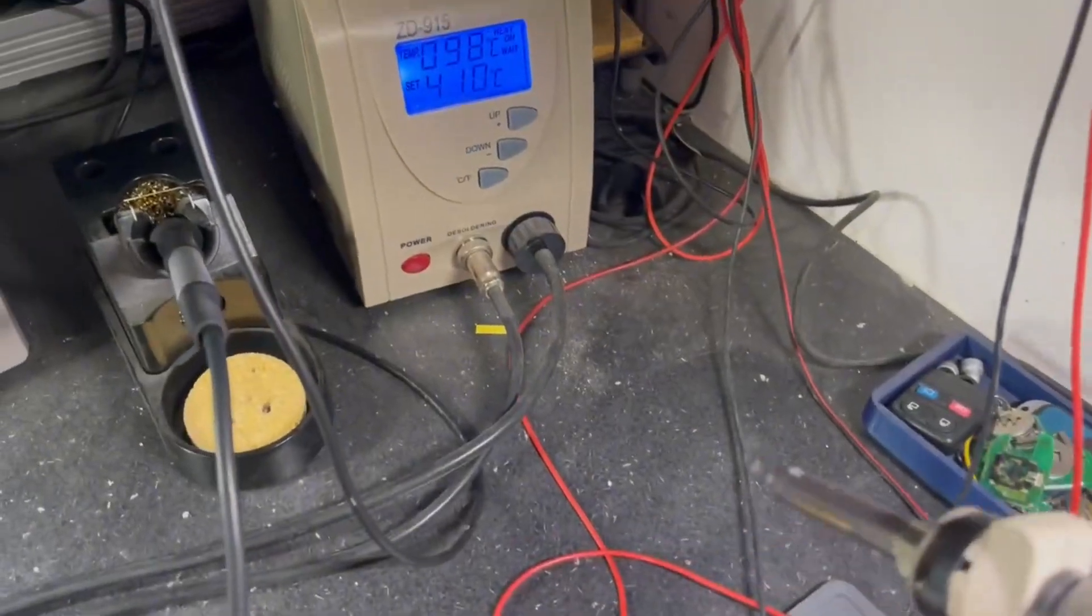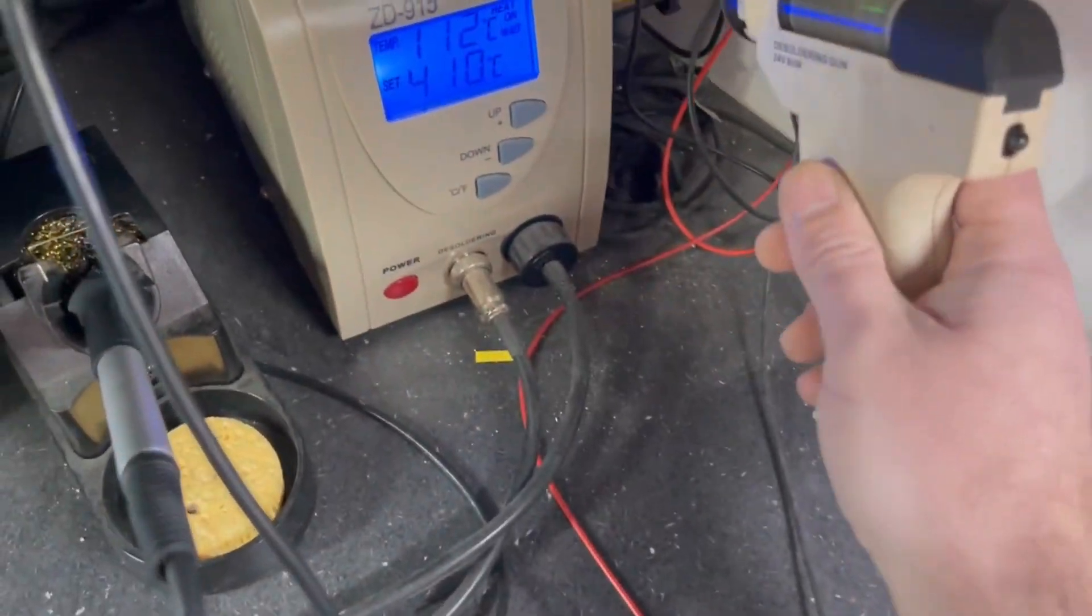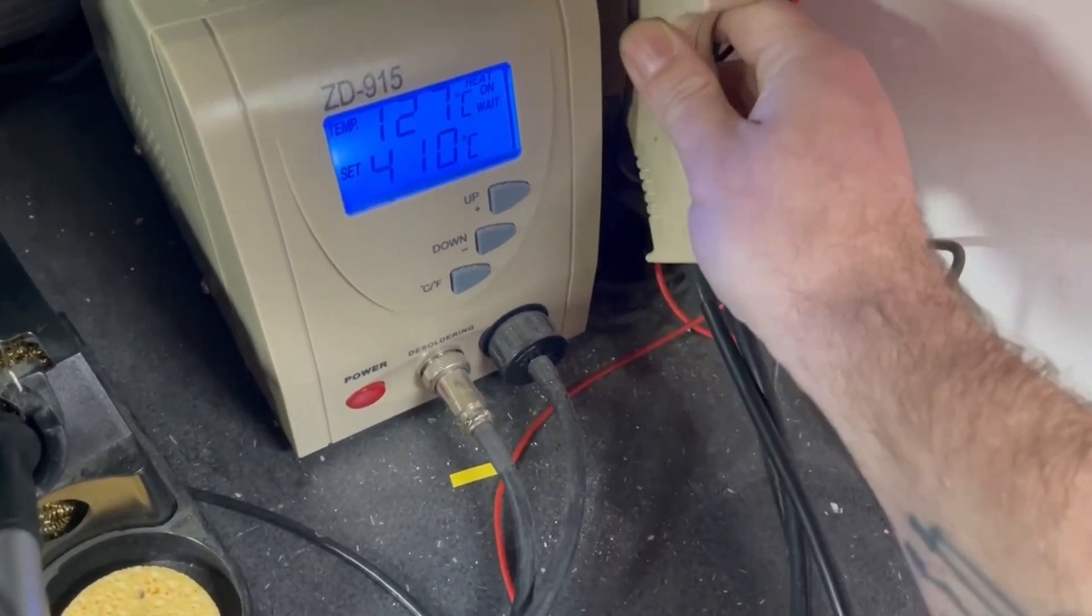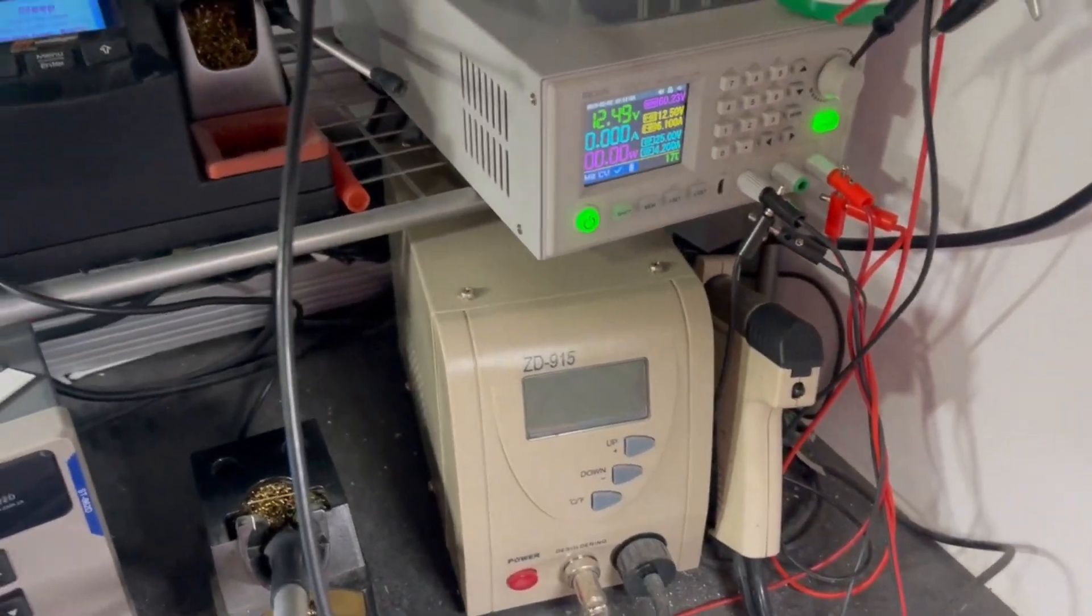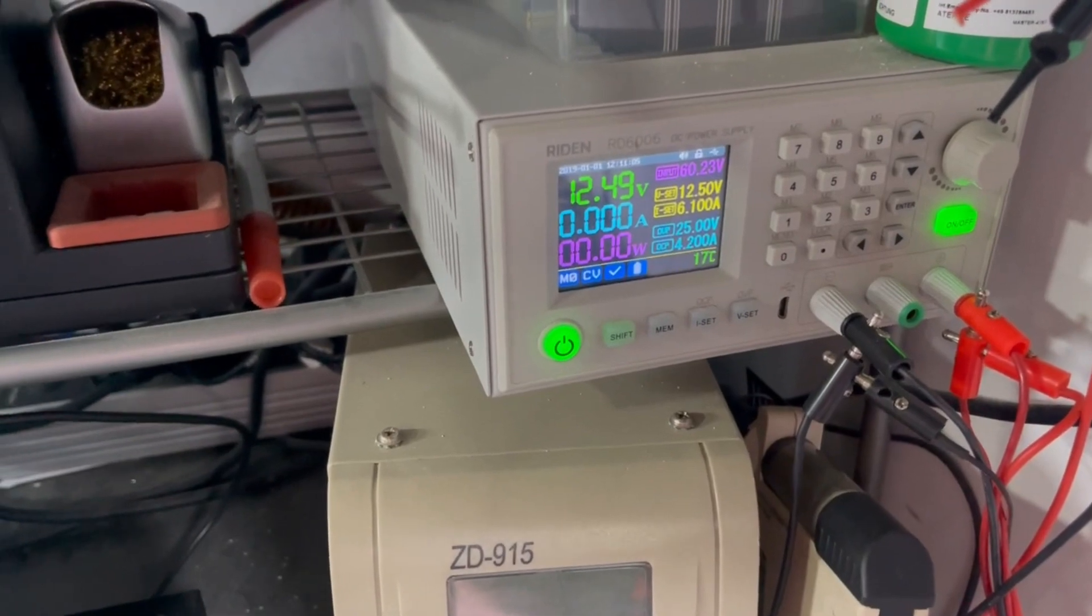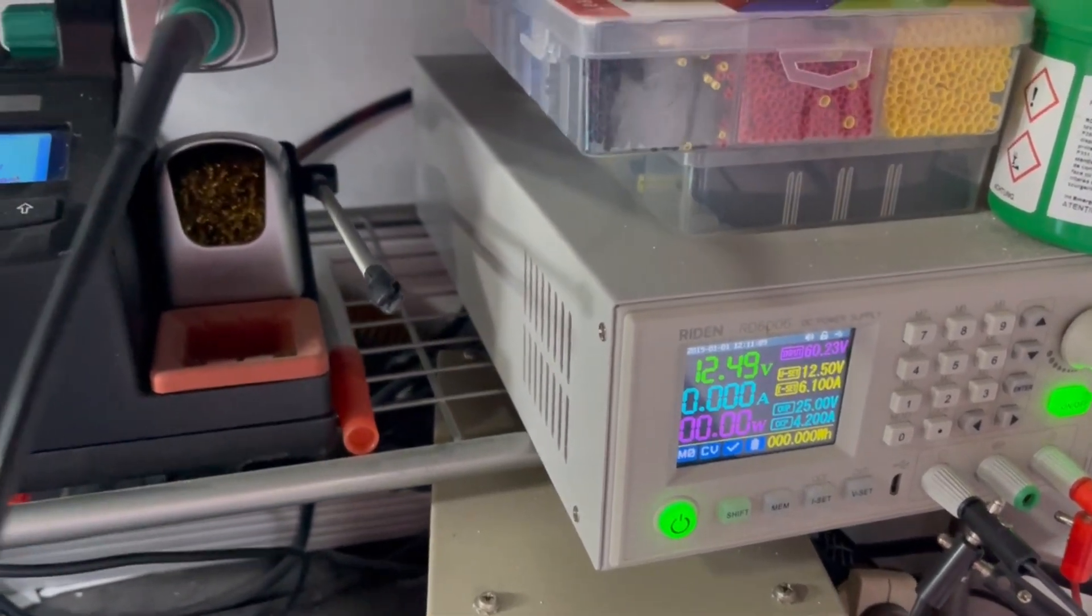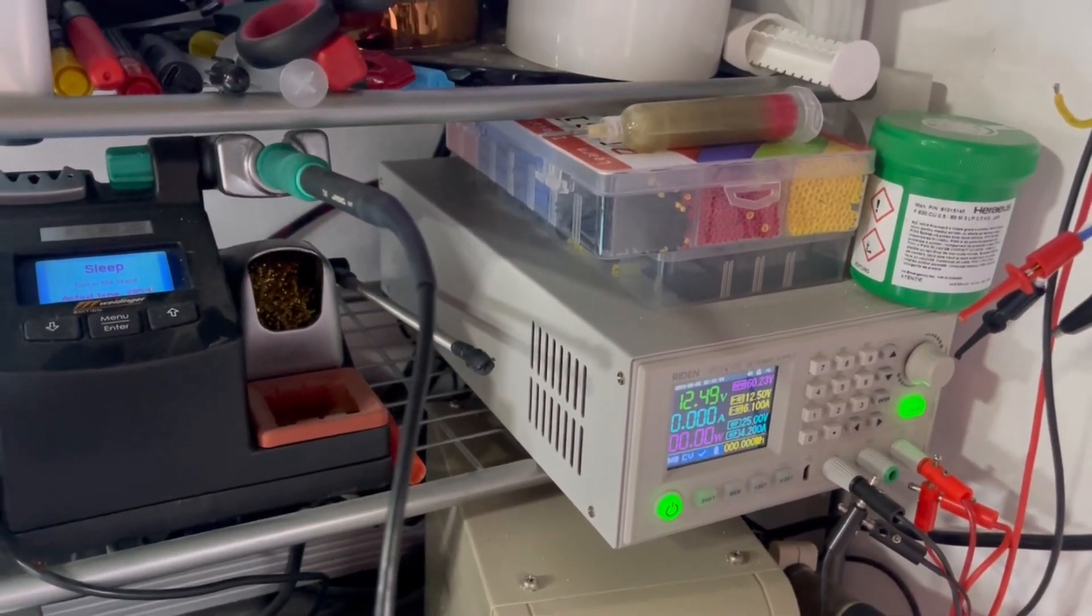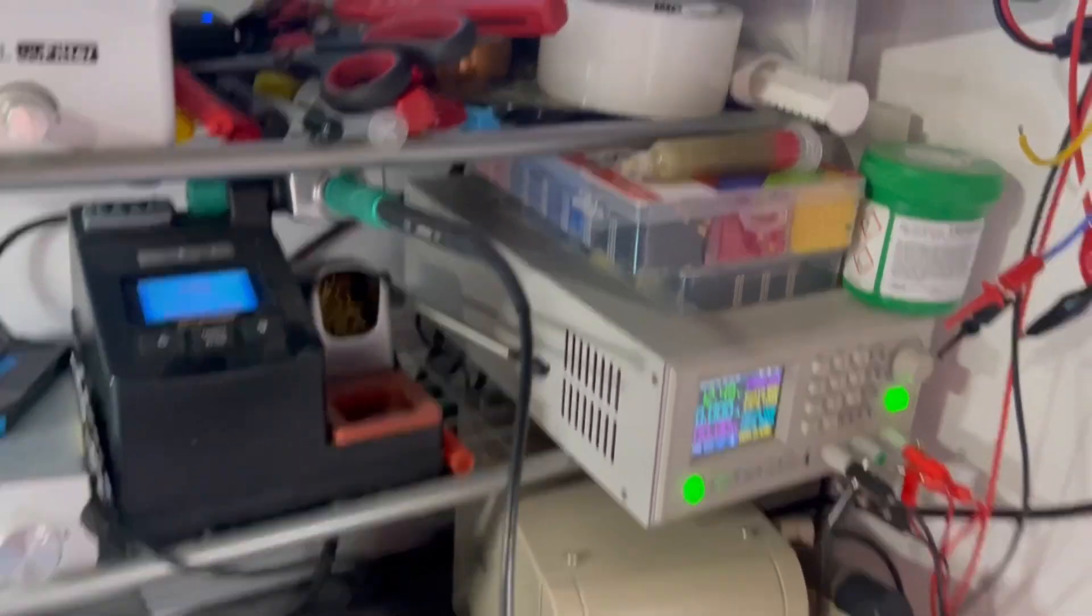This is my ZD 915 desoldering station or gun. I need to clean up the cooling fan. As a power supply, I use this Raiden 6600. It's maximum 6 amps and 60 volts.